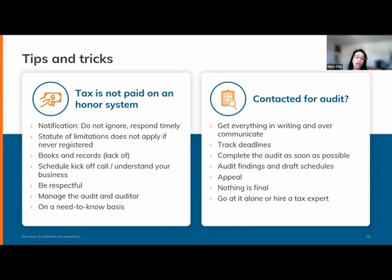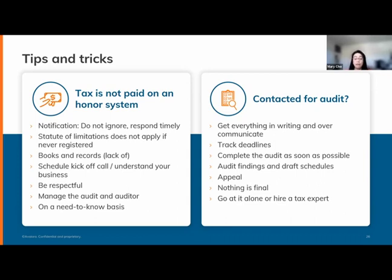Nothing is final — even if the auditor says there's no adjustment, they'll send the report to their supervisor who may disagree and come back with an assessment. Likewise, I've had situations where we filed a use tax refund that was overpaid, the state agreed and issued a six-figure check, and then a year and a half later the state came back saying they made a mistake and wanted the money back. They can do that within the statute of limitations. Similarly, if you find an exempt certificate after the audit within the statute of limitations, you can go back and ask for a refund.